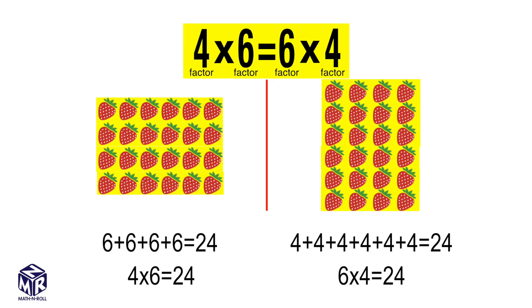As you can see, we can change the order of our factors and the product stays the same. 4 times 6 and 6 times 4 both equal 24.